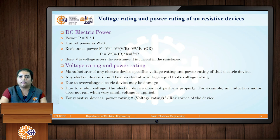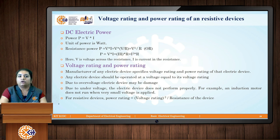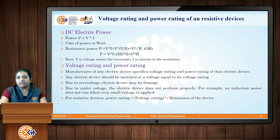Voltage rating and power rating are very important for electrical devices. The manufacturer specifies a particular voltage rating and power rating — the device should operate at that specific voltage only. If the voltage applied is more than the rated voltage, the overload or over-voltage can damage the device. If under-voltage is applied, the equipment will not perform as per specifications — for example, an induction motor receiving too low a voltage will run at much lower speed. For resistive devices, the power rating is written as V squared over R.